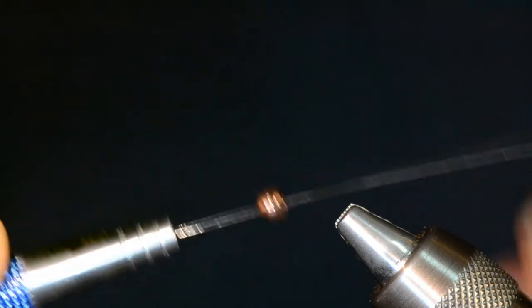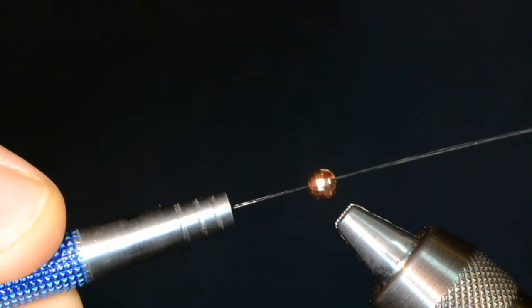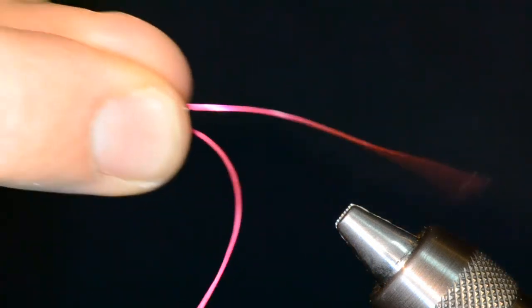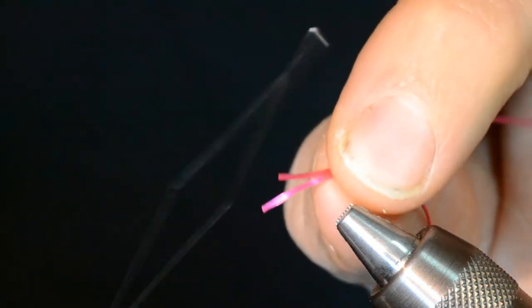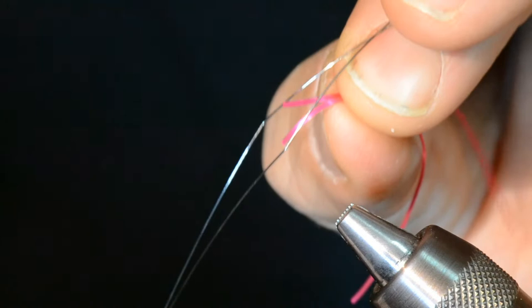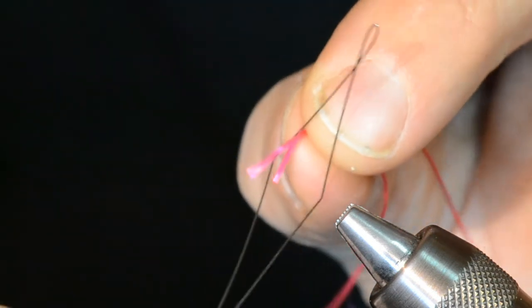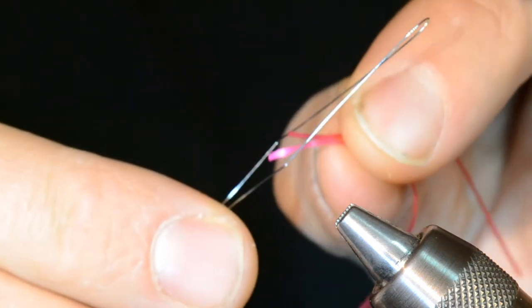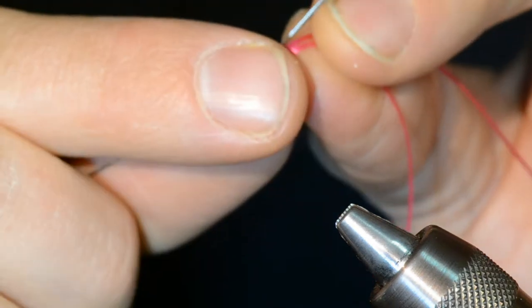All right, so the first step with tying this guy before you even bother with putting the hook in your vise is to find your little bobbin threader, one of these guys, and thread your tungsten bead onto that guy. We're going to use that to help run the little rubber legs through the bead. So there's two rubber legs. I'm just going to put them right into there and just capture them with the bobbin threader. Slide those guys right through the center of the bead.